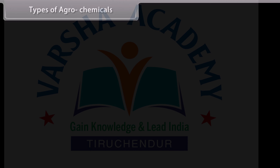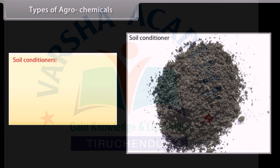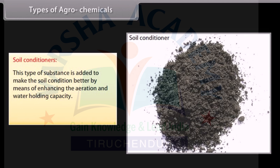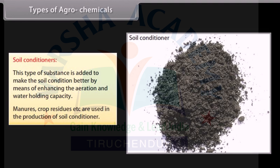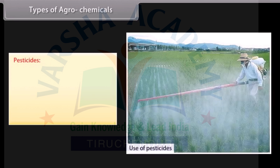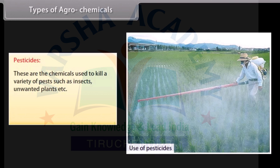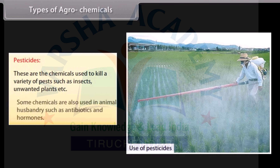Soil conditioners are substances added to make soil conditions better by enhancing aeration and water-holding capacity. Manures, crop residues, etc. are used in the production of soil conditioners. Pesticides are chemicals used to kill a variety of pests such as insects and unwanted plants. Some chemicals are also used in animal husbandry, such as antibiotics and hormones.